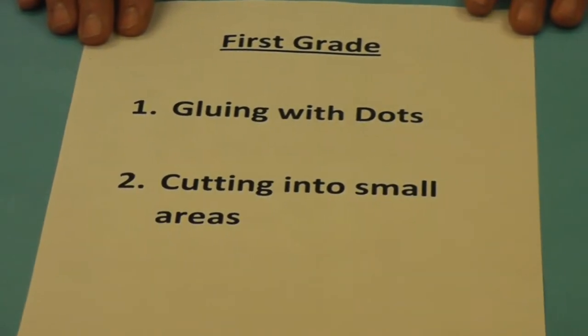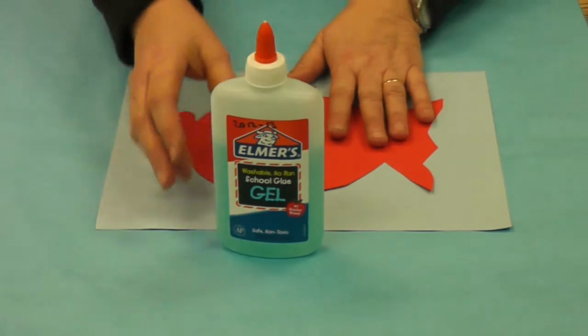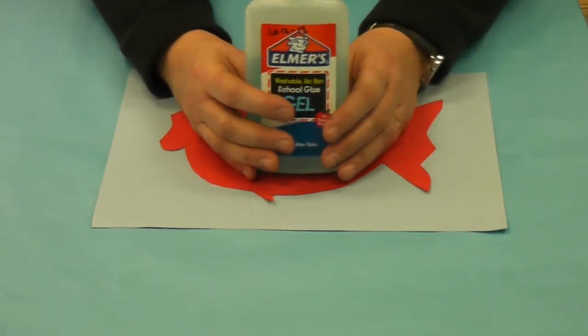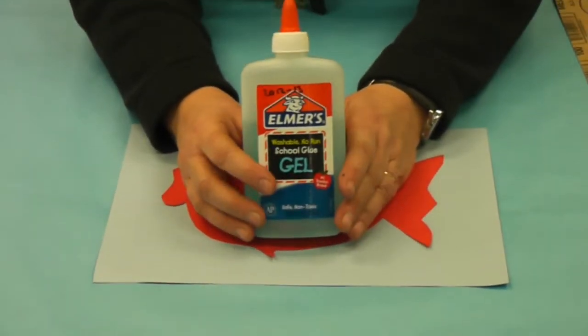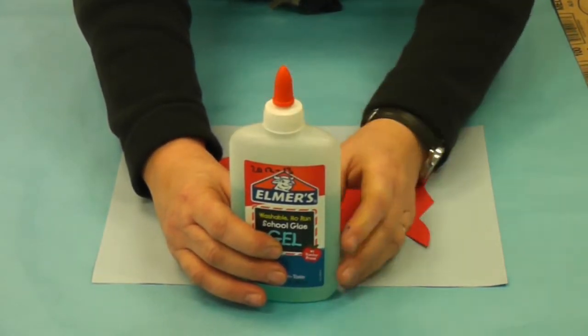Gluing with dots and cutting into small areas. Okay, we're going to glue with dots, but first we have to check our glue bottle. If the white dot is showing, it means it's closed, so we just turn the orange.